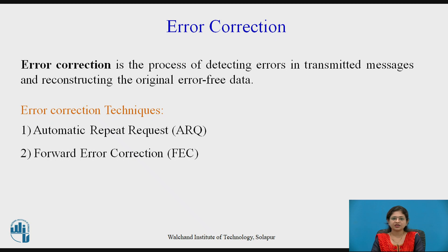Let's see what is error correction. Error correction is the process of detecting errors in a transmitted message and reconstructing the original error-free data. There are two error correction techniques: Automatic Repeat Request and Forward Error Correction.